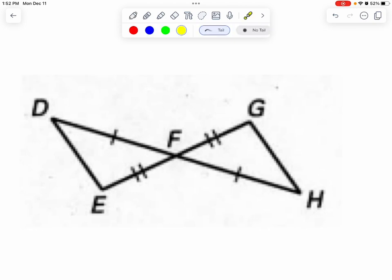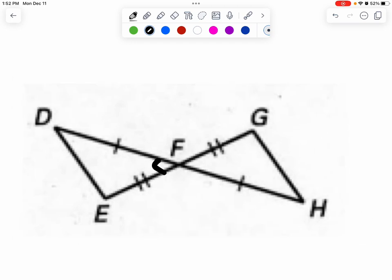I see a bow tie. Do you remember when we have bow tie angles? I want you to mark them equal, so put the little swoops in there.